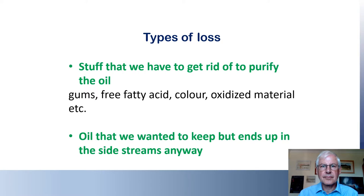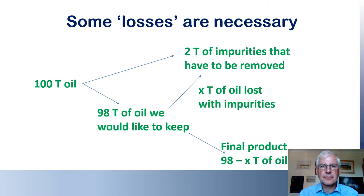It's important to remember that what we often call losses consists of two types of material. There is the stuff we have to get rid of to purify the oil, but at the same time there's always a certain amount of oil we would prefer to keep that is drawn away into the side streams. If a hundred tons of oil contains 2% of materials such as gums, fatty acids and other impurities, we have to remove two tons just to get the oil into a saleable condition — and we cannot reduce that figure. But during this separation some good oil ends up in the side streams, shown as X in the picture. This is the real loss we can try to do something about. If we can accurately measure this loss in the different places it occurs, we can see the effects of tuning the process to reduce it to as close to zero as possible.